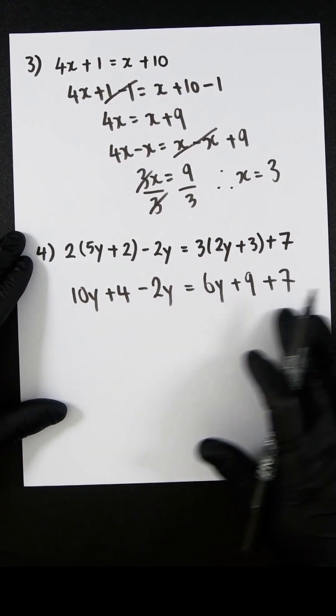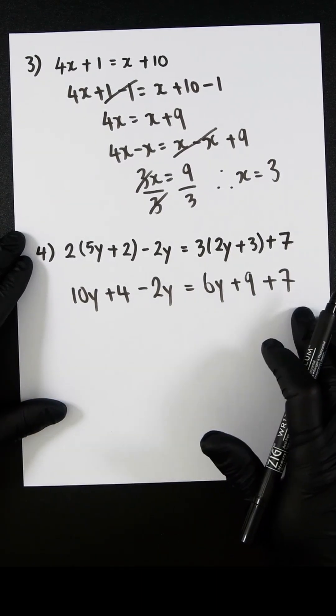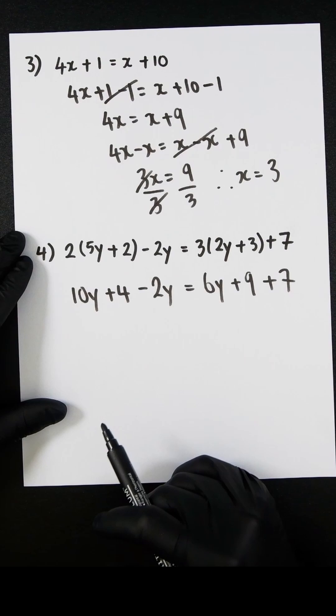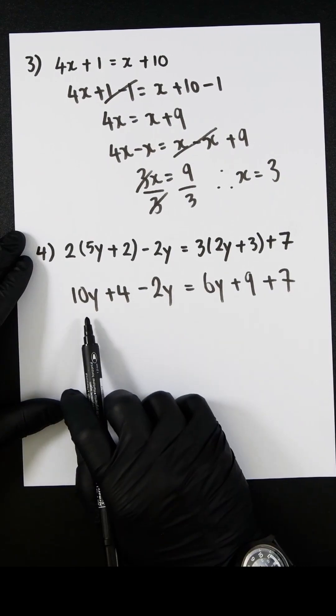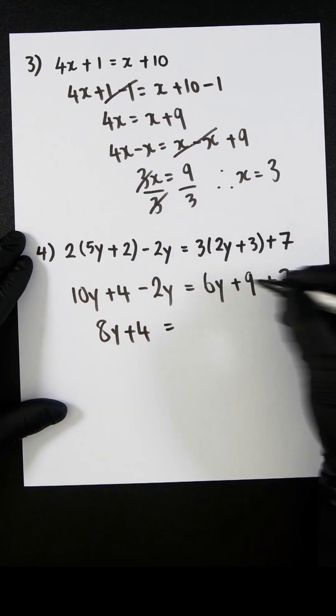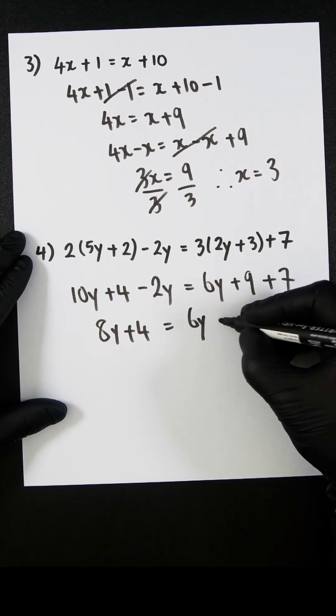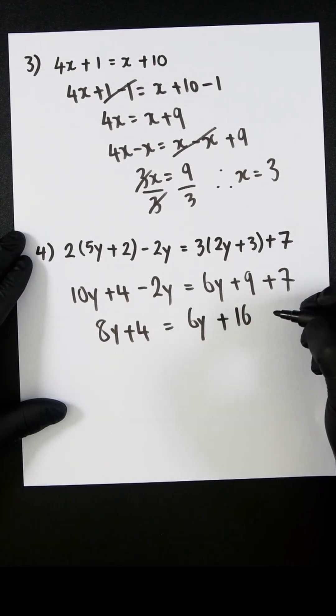We can now clean up the left side and right-hand side by looking at what are all the common parts that we can now simplify. So 10y minus 2y is 8y, and we have this 4. And on the right-hand side, we have a 6y by itself, and we have a 9 plus a 7. So that's going to be 16.